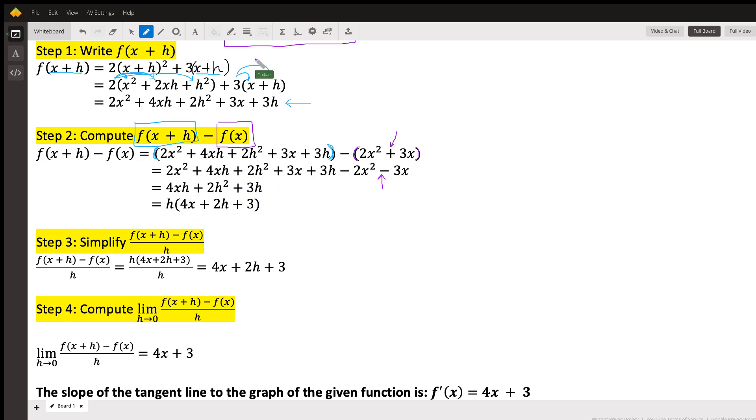And then simplify and we get 4xh + 2h² + 3h. Now, this last step is actually a little bit optional for step two. I don't know if that's how you solved it in class, but if you want to, and you notice a common h common factor, then it's really helpful to factor that out at this stage. And that makes our life a lot easier in the next step.